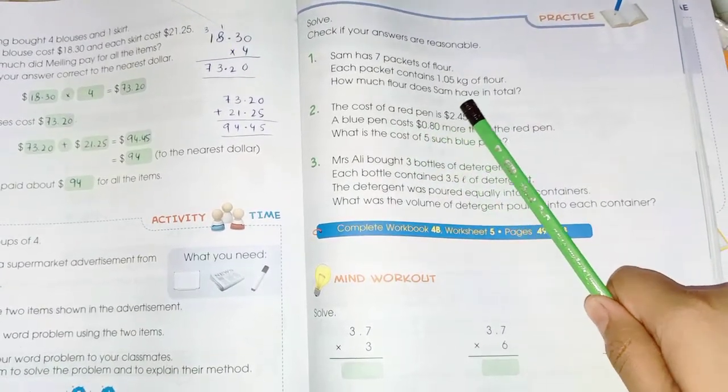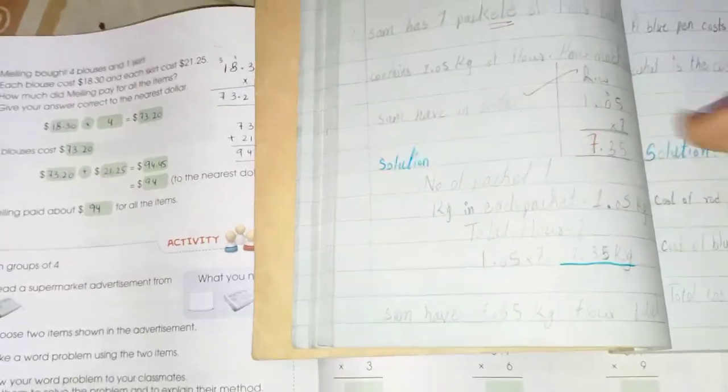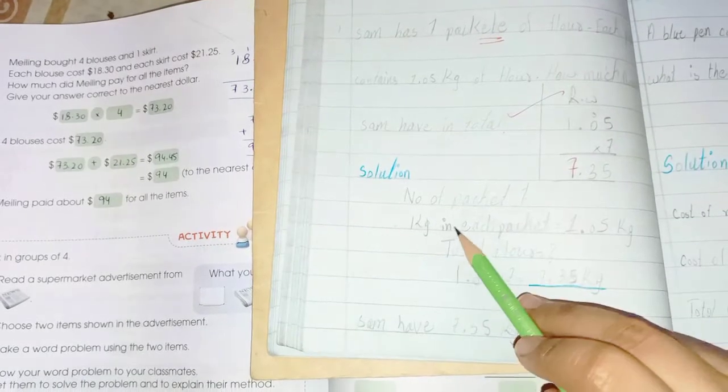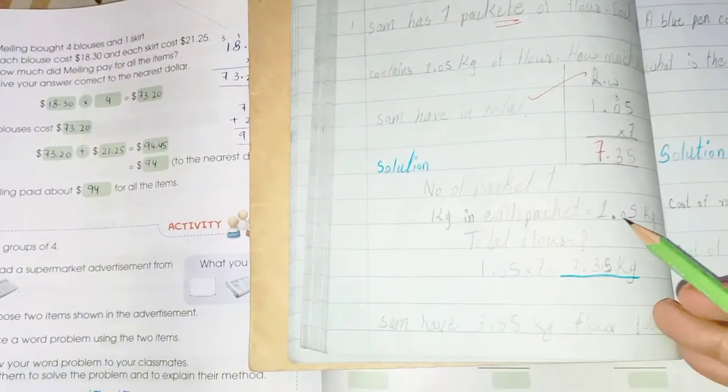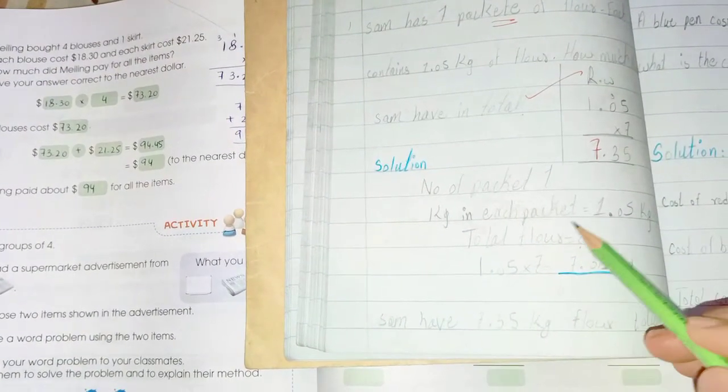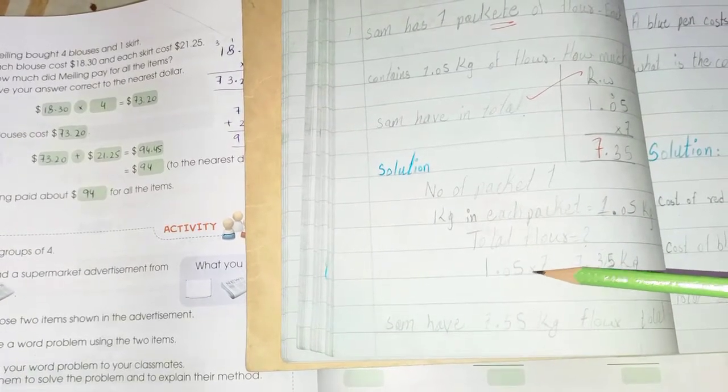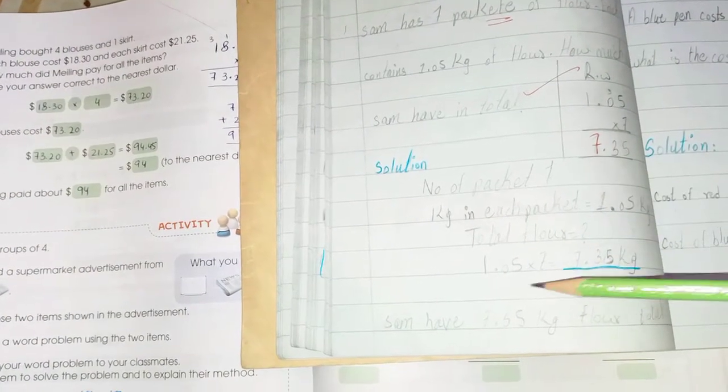So here we have the solution. Number of packets: 7. Kilograms in each packet: 1.05 kg. Total flour: we have to find. So we simply multiply 1.05 kg with 7 packets. The answer is 7.35 kg. Sam has 7.35 kg of flour total.